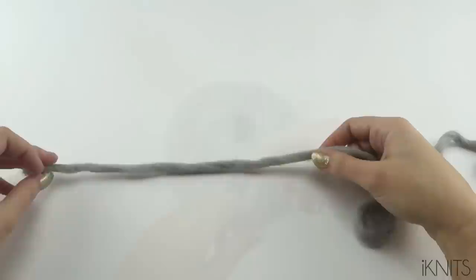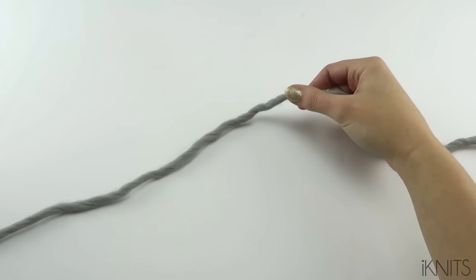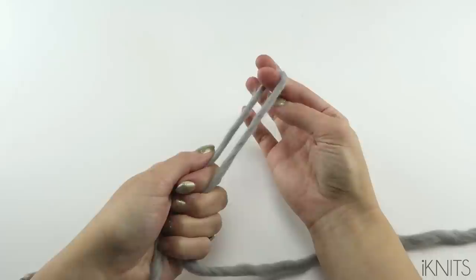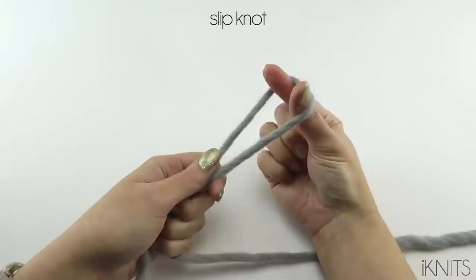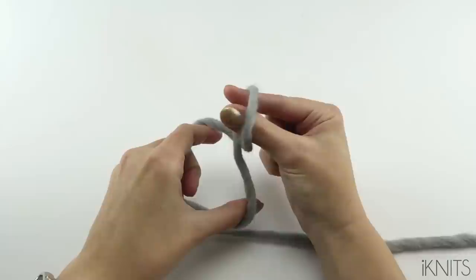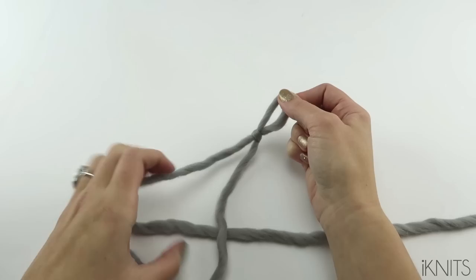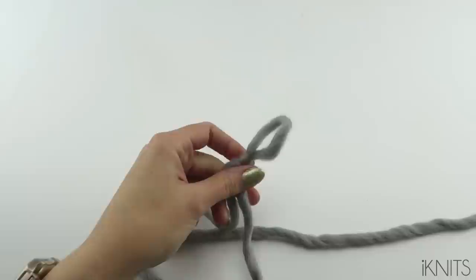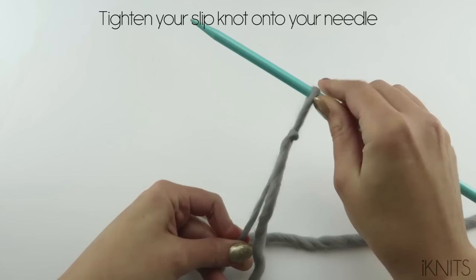Now we are going to make a slipknot to do our long tail cast on. So depending on how many you have to cast on is how long you need your tail to be. And then you're going to make a slipknot. So this is how I hold my yarn. I put my index finger and thumb just right there. I twist the yarn and I'm going to grab the yarn that's underneath and I just pull it. And then it makes a slipknot. And then with one of your needles you're going to tighten it onto your needle. Just like that. Pretty easy right?